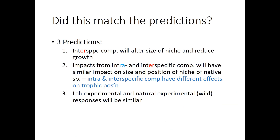So does that result match the predictions? Prediction two was that impacts from intra- and inter-specific competition would have similar effects on the size and position of the niche of native species. But they show that inter- and intra-specific competition actually had different effects on trophic position, so that also doesn't agree with what they had expected.